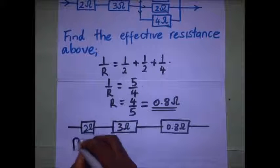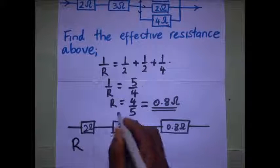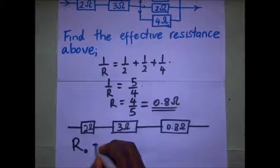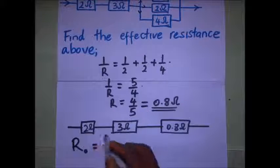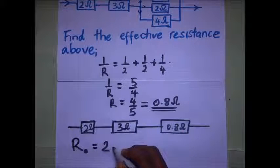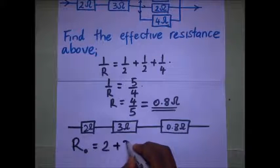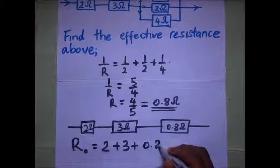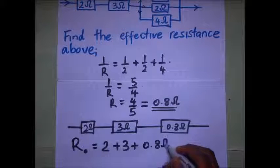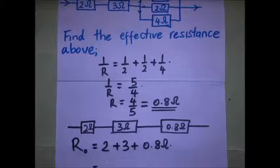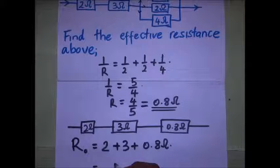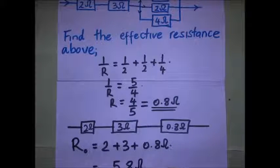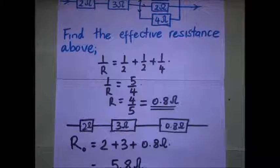Our effective resistance R naught is going to be equal to 2 ohms plus 3 ohms plus 0.8 ohms. 3 plus 2 is 5, plus 0.8 gives us 5.8 ohms. So 5.8 ohms is the effective resistance of this entire combination.